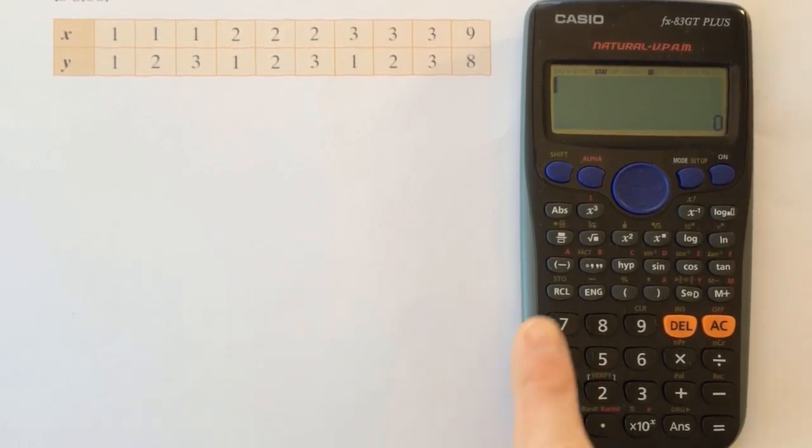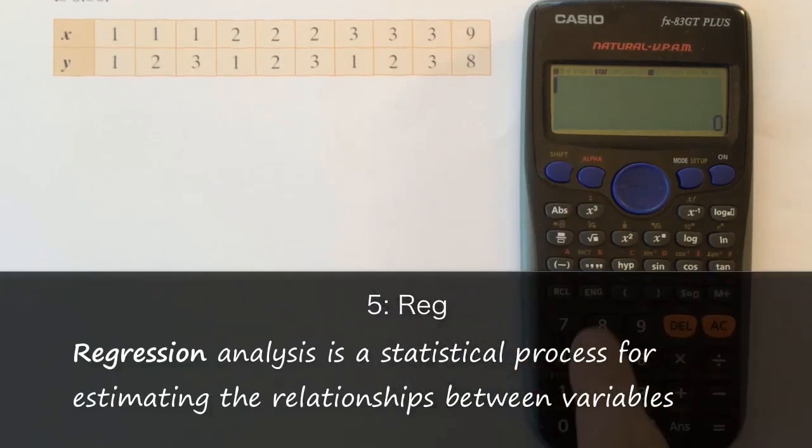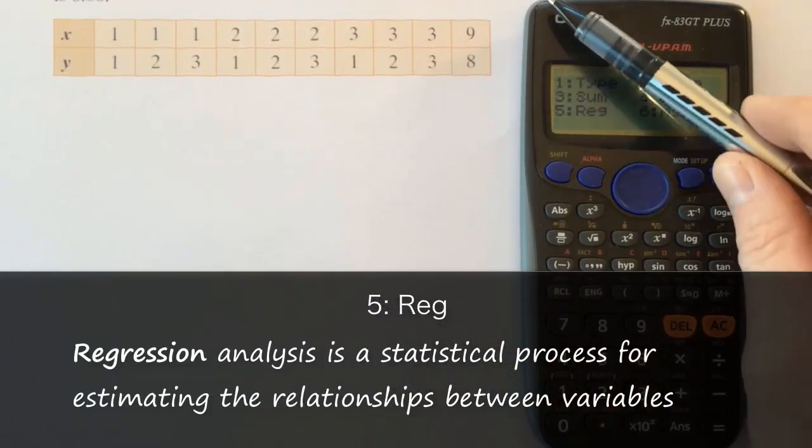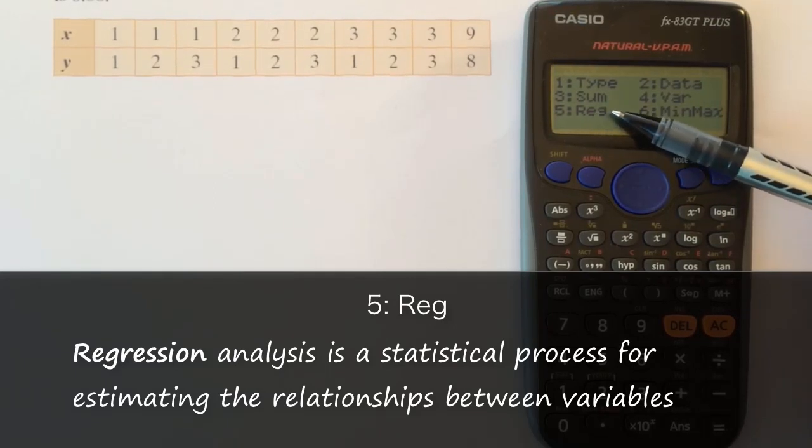To ask the calculator a statistics question, I'm going to press shift and 1 for stat. Shift and 1. I will find what I'm looking for, the correlation coefficient, under option 5 here.